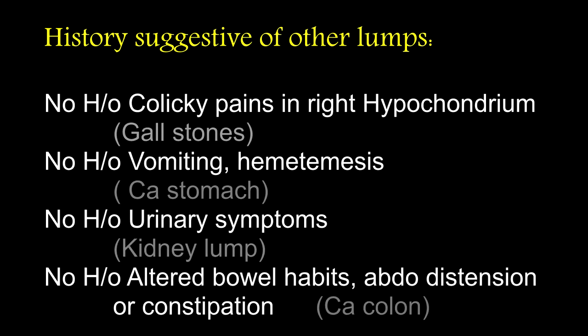Regarding history suggesting other lumps: no history of colicky pains in the right hypochondrium. No history of hunger pains or pain related to meals. No history of vomiting or hematemesis. No history of urinary symptoms. No history of altered bowel habits, abdominal distension or constipation.